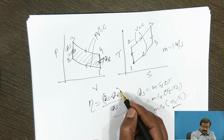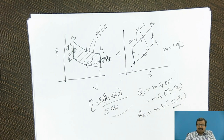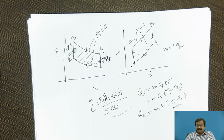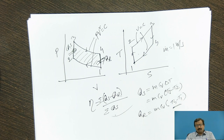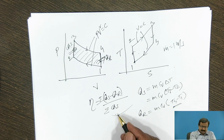The efficiency formula uses the algebraic sum of all heat interactions divided by total heat supplied — it is not just a single Q. Students often make mistakes when a cycle has more than four processes, for example six or seven processes (1→2→3→4→5→6→7→8→1), where heat is supplied in some processes and rejected in others. The work output is always the area under the curve, but the denominator must be the total heat supplied across all relevant processes.